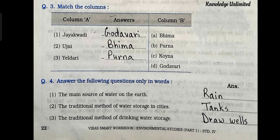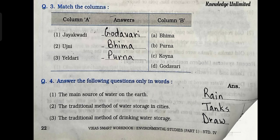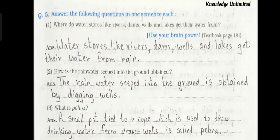Question four: the first one is the main source of water on earth — answer is rain. Second: the traditional method of water storage in cities — the answer is tanks. Third: the traditional method of drinking water storage — the answer is drawwells.